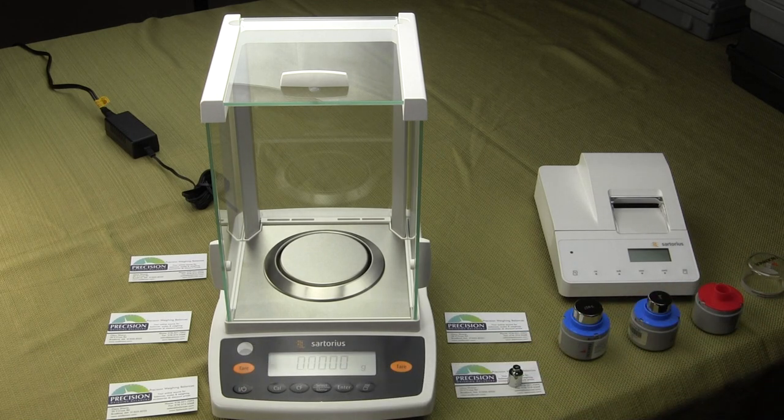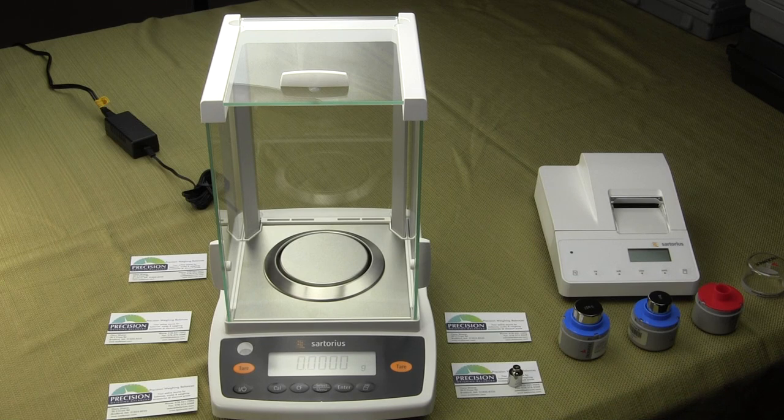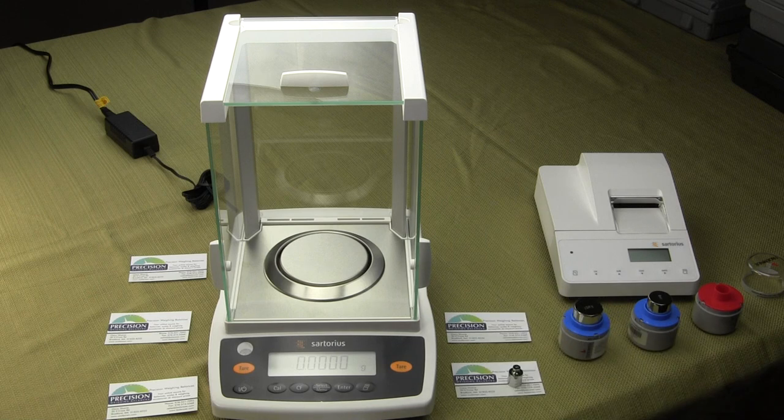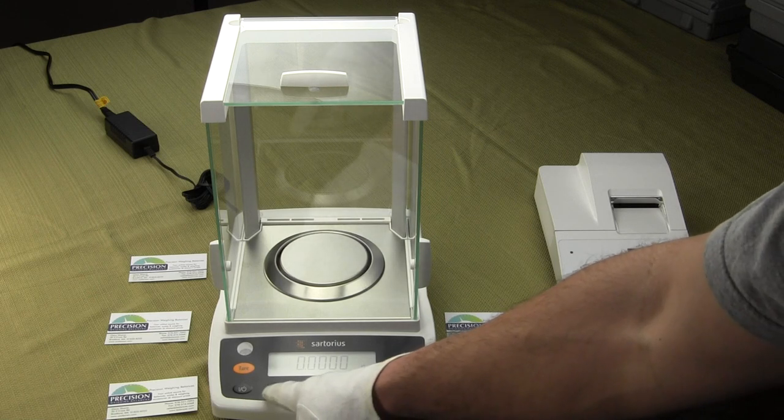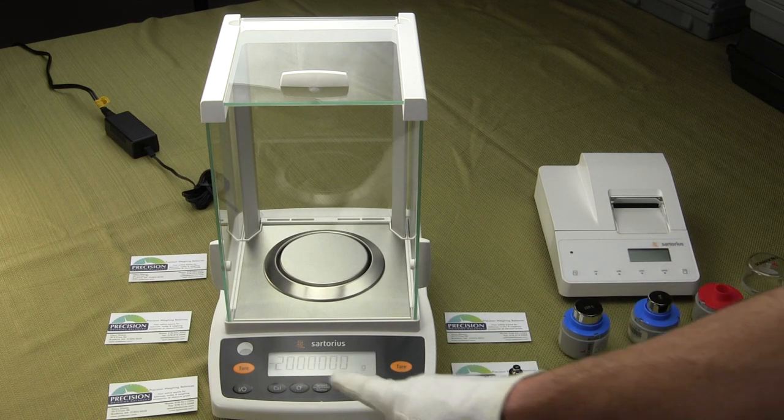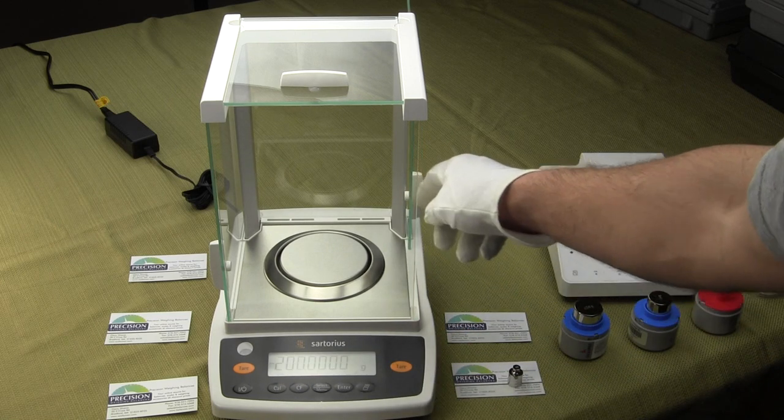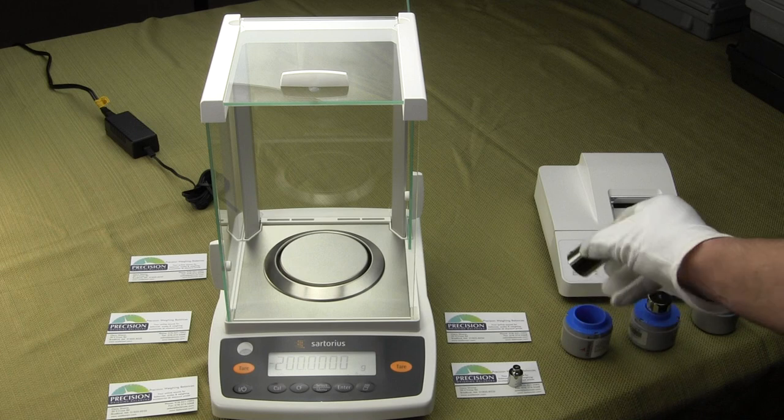This balance has been on for at least an hour. You always want to have your balance on for a minimum of an hour before doing a calibration. The balance also has to be level. To perform calibration, simply press the CAL button. You'll notice the display says external CAL and then it flashes to 200 gram weight. You need a 200 gram class 1 weight, which I have here.